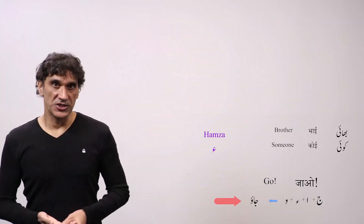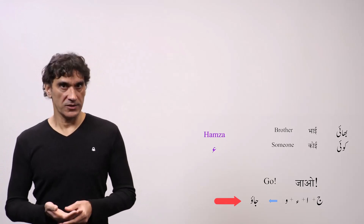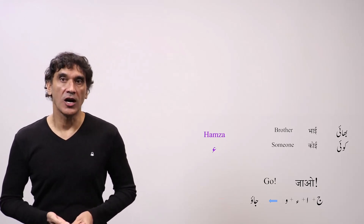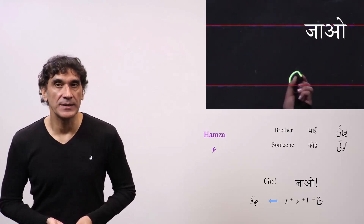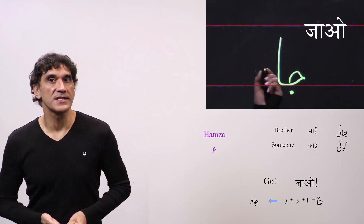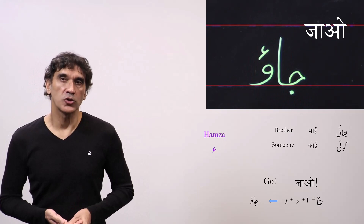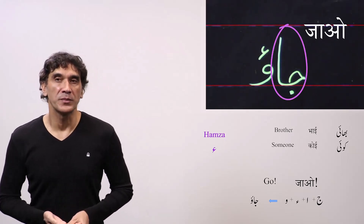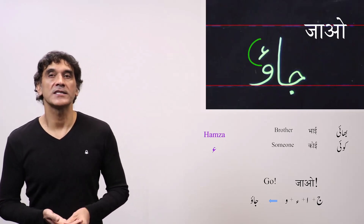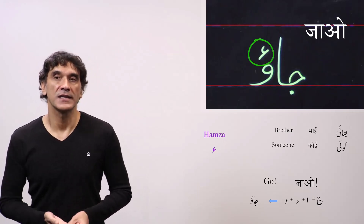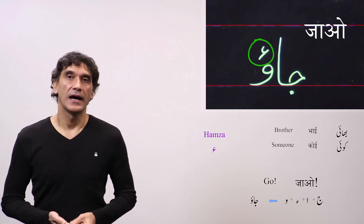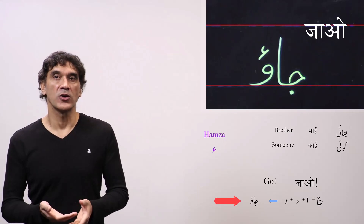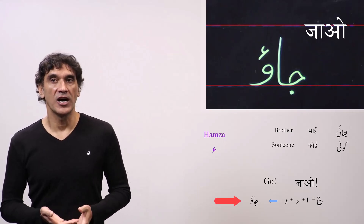The next word is Jao, the tum imperative form of the verb Jana, meaning 'to go.' Here, right after A you have the vowel O. The spelling is Jim plus Alif plus Hamza plus Vav. You write Jim plus Alif to make Ja. In the case of Hamza on Vav, the letter Hamza does not have a Sosha — Hamza is directly written on Vav. So Jim plus Alif makes Ja, and Hamza on O is written separately: Jao.